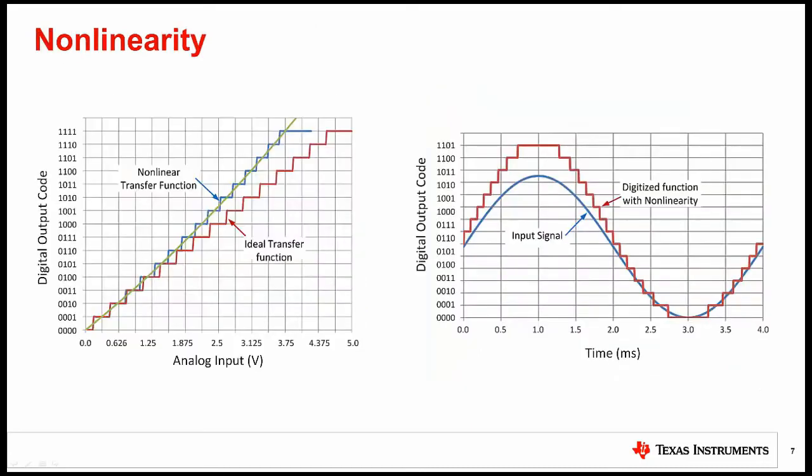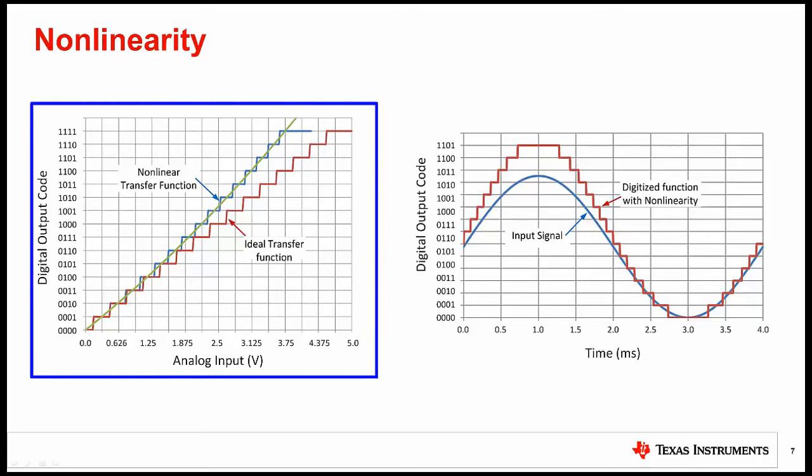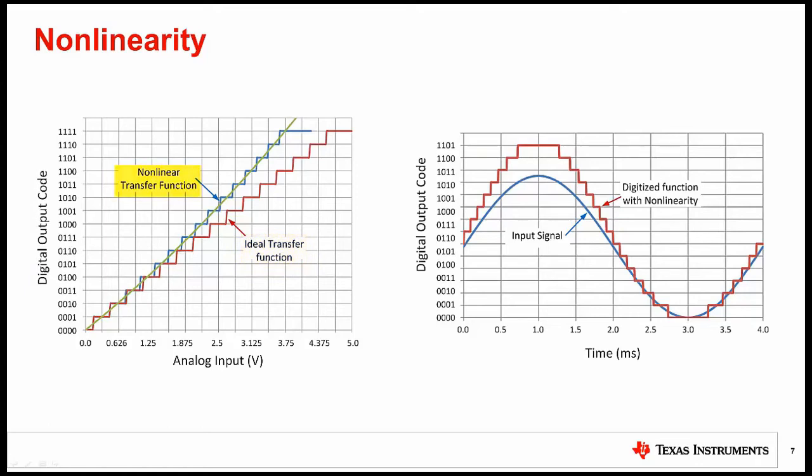Another common AC specification is total harmonic distortion, or THD. In order to understand THD, it is important to understand nonlinearity. Nonlinearity is a measurement of how much a transfer function deviates from its ideal straight line. The transfer function shown on the left-hand side of the slide shows an ideal linear transfer function and a nonlinear transfer function.